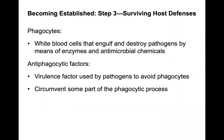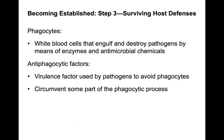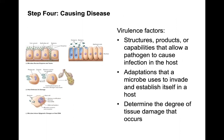Step three is surviving host defenses. Phagocytes are white blood cells that engulf and destroy pathogens by means of enzymes and antimicrobial chemicals. Pathogens have antiphagocytic factors — virulence factors used to avoid phagocytes or circumvent parts of the phagocytic process. A capsule, for example, will actually prevent phagocytosis, which is something we discussed earlier in the semester.